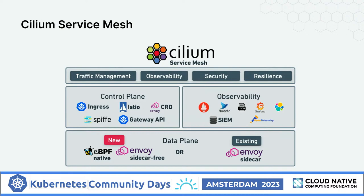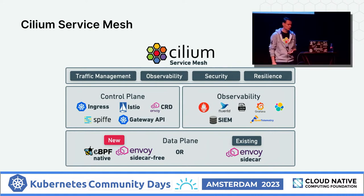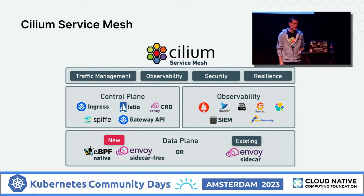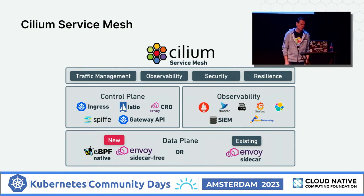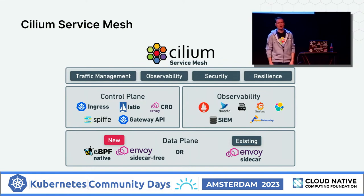Today Cilium Service Mesh can do: traffic management with Layer 7 path redirection, observability using Hubble with metrics exported to Grafana, security enforcement through Cilium network policies extended by service mesh capabilities, and resilience through cluster mesh topologies. We're not planning to develop our own control plane — you can use ingress resources or Gateway API resources. SPIFFE is on the roadmap; the data plane is ready but the control plane needs to be developed. For power users, Cilium also supports advanced Envoy custom resource definitions, but with Gateway API my vision is that you won't need those anymore.